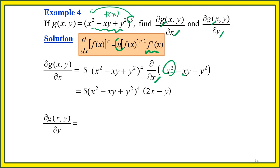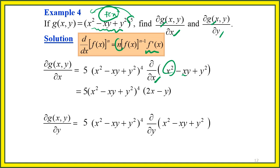For g_y, the same power rule applies: 5(x² − xy + y²)⁴, then multiply by the partial derivative of (x² − xy + y²) with respect to y. Differentiating with respect to y: x² is constant (zero), −xy gives −x, y² gives 2y. So g_y = 5(x² − xy + y²)⁴·(−x + 2y).